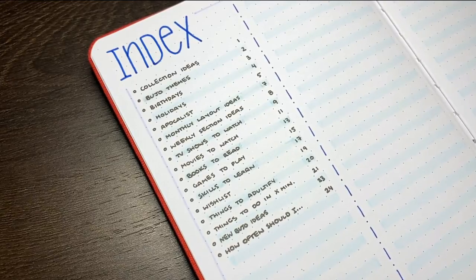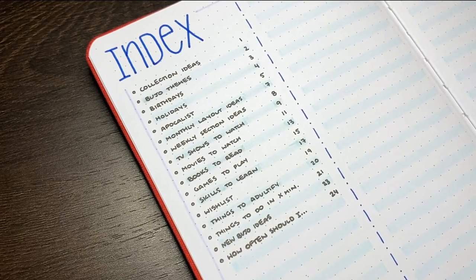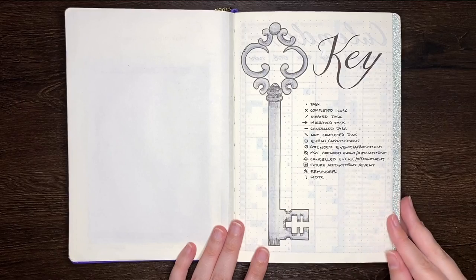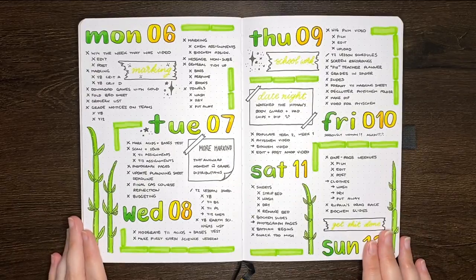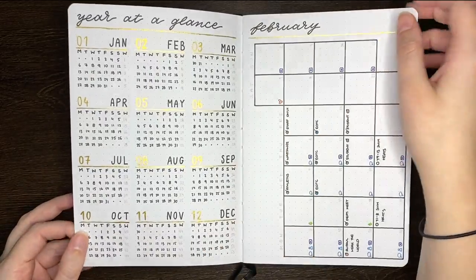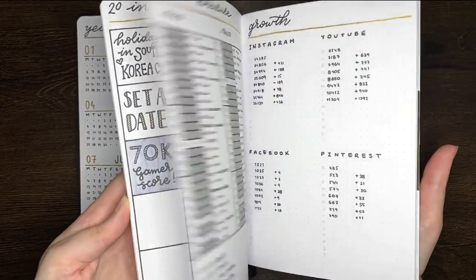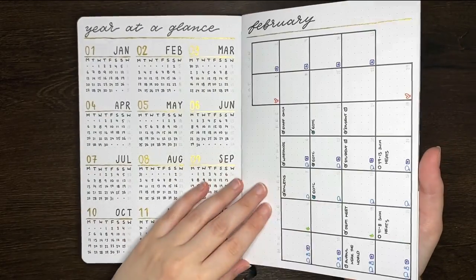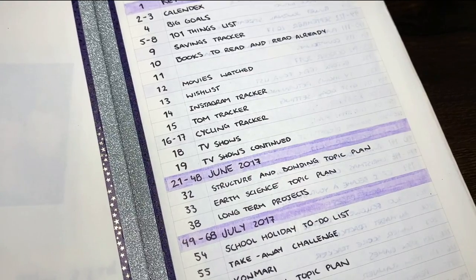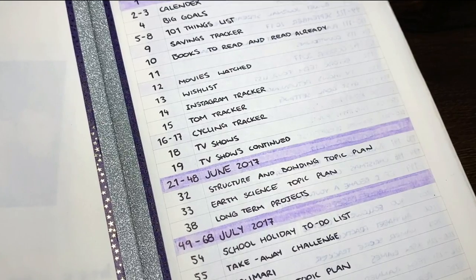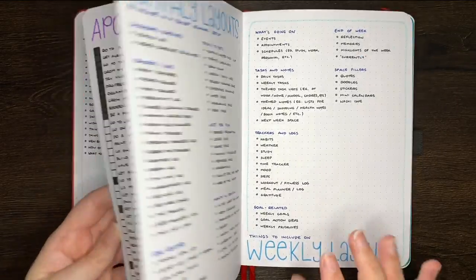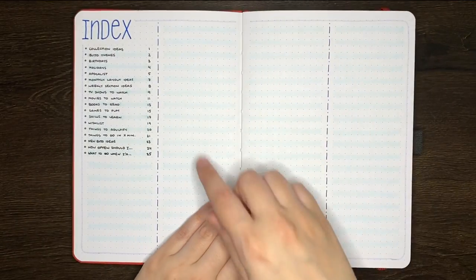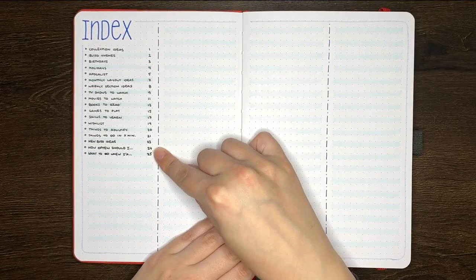The index is one of the main parts of the original bullet journal method, with the others being the key, the future log, the monthly logs, and the daily logs. Despite being a core component, the extent to which the index is now used in our community is actually quite varied, and it really depends on how each individual likes to use and organize their journals. However, the index can still be a powerful tool that helps keep your organization system organized.